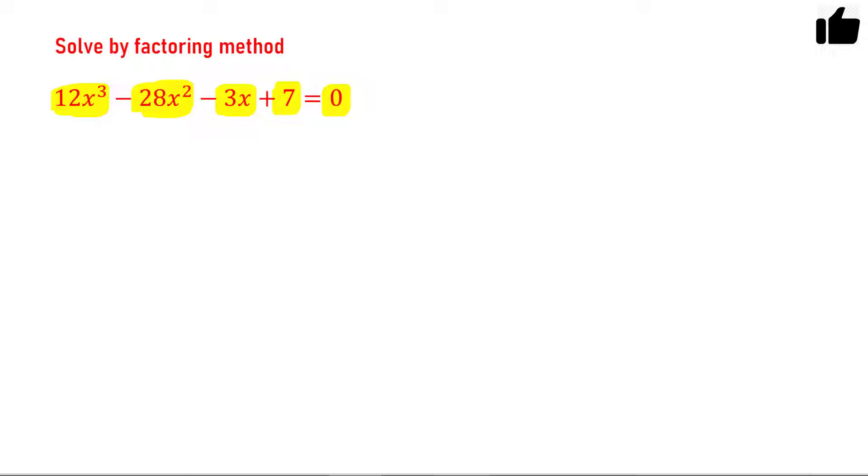Let us try to factorize. I will consider these two terms together and these two terms together. What is the common factor in these two terms? We have 4x² as the common factor. Let us take 4x² as common and then I will have 3x - 7, and here if I take -1 common then again I will have 3x - 7 and this equals 0.